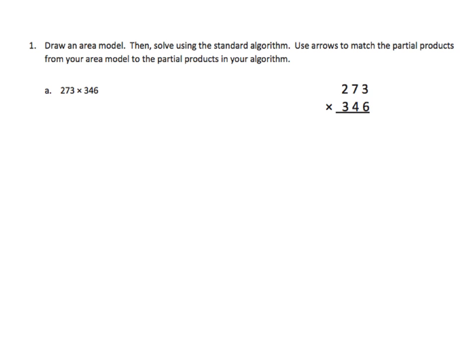Let's read our instructions. It's much like it was the previous lesson. We're going to draw an area model, meaning we're going to make a rectangle. Then we're going to solve using the standard algorithm, the way we traditionally do it. And we use arrows to match the partial products from the area model to the partial products in the algorithm. The main difference between today and yesterday is the size of our numbers. We're now multiplying three-digit numbers by three-digit numbers, and indeed we'll work with three-digit numbers times four-digit numbers.